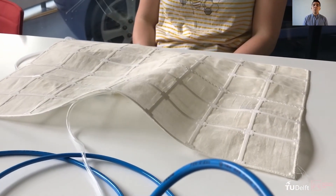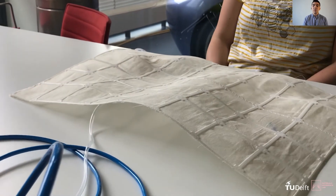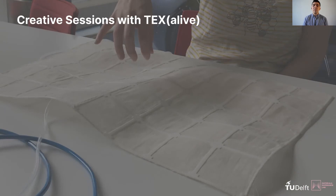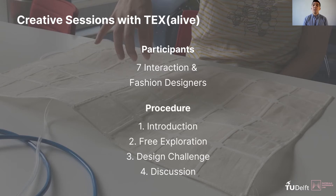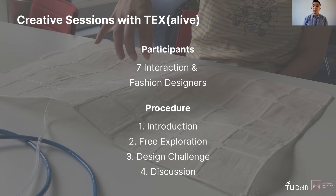To explore how the toolkit is mobilized in the exploration of temporal expressions and identify points for further improvement, we conducted creative sessions with seven designers — interaction and fashion designers with prior experience designing with novel interactive materials, in particular smart textiles. The session consisted of four steps: first, an introduction to the toolkit's physical and digital components; second, free exploration with the toolkit; third, designers were asked to set a specific design goal with a temporal expression, such as 'I would like to design a carpet which moves like a manta ray.' The designer would then prototype and test their temporal expressions until their design was completed. The session ended with a final discussion on their experience with the toolkit.